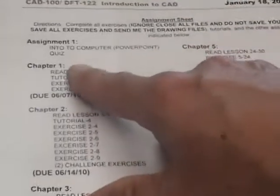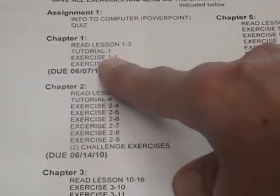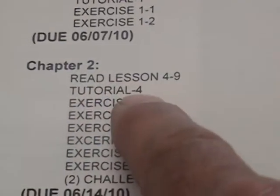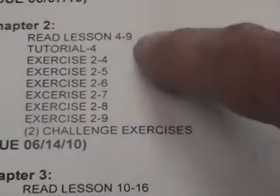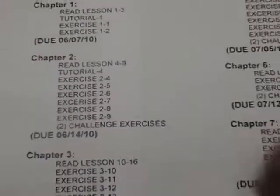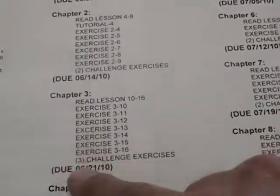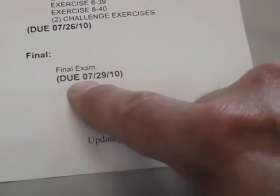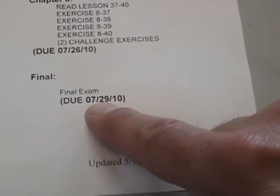Looking back at the assignment sheet, Chapter 1 has two assignments — the one we just went through and the Hands-On Tour. There are some tutorials in there underneath the folder called Content Supplement. You do them and send them to me. At the end you'll have two challenges, except for Chapter 3 where you'll have three. The final will be made available right after the 26th of July and it has to be in no later than the 29th.